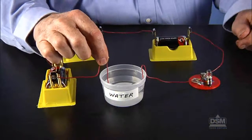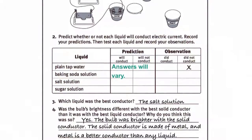Have students predict whether the plain tap water will conduct an electric current. Then, have them use their circuits to test the plain tap water and record their results on their activity sheets.